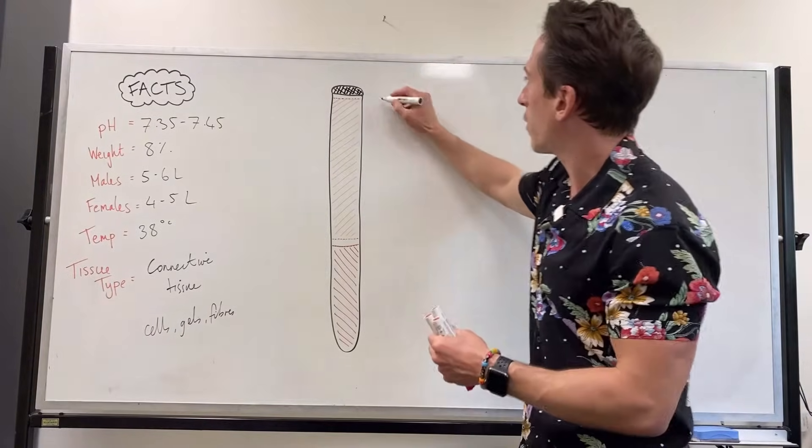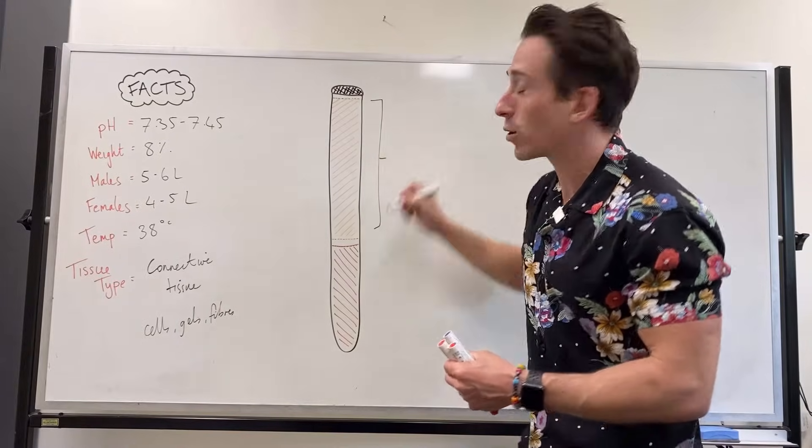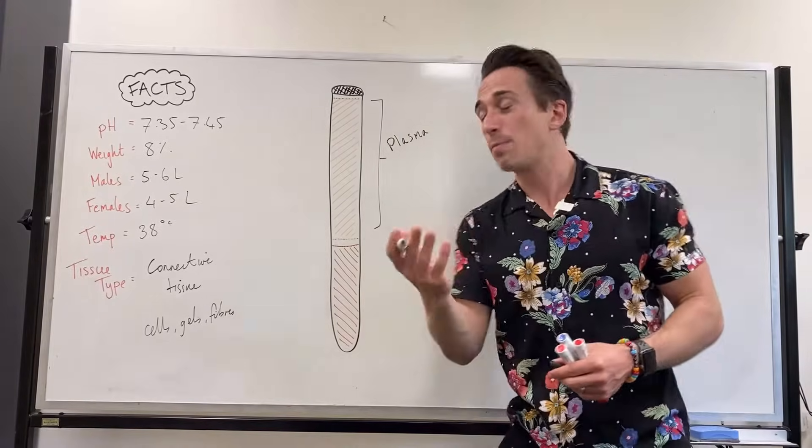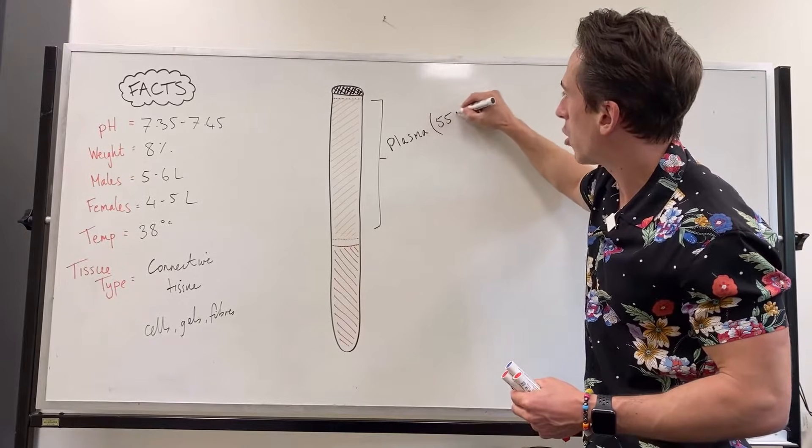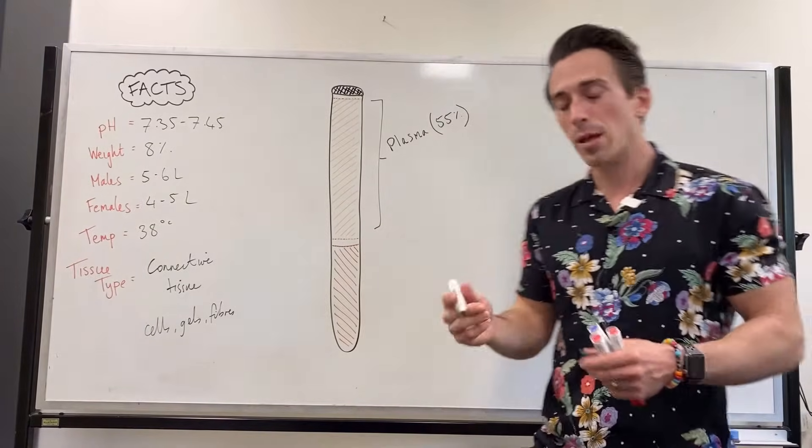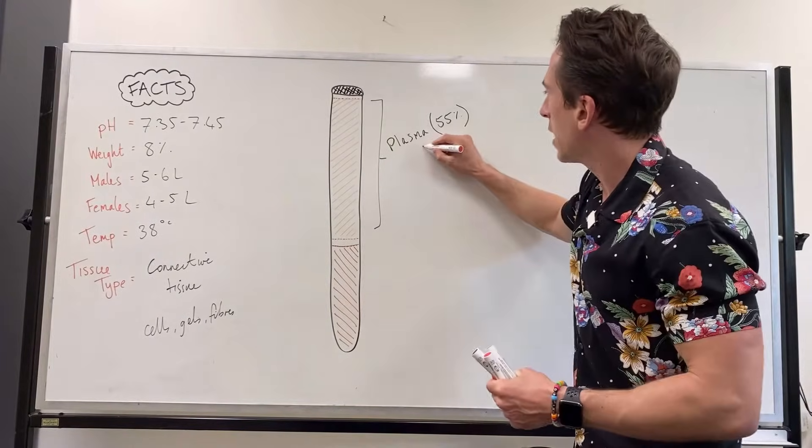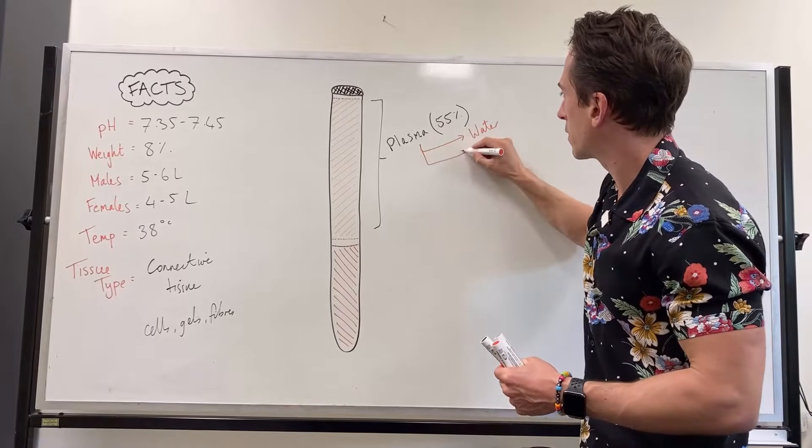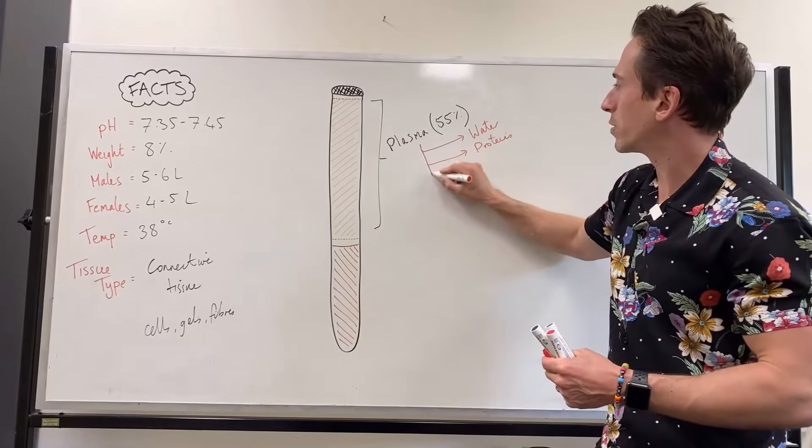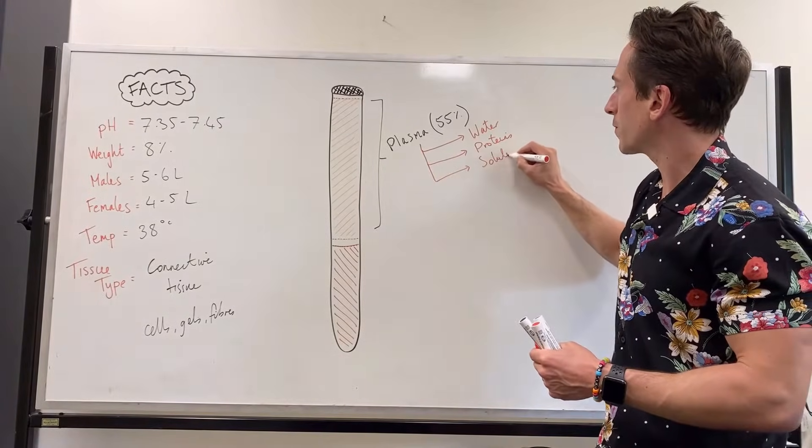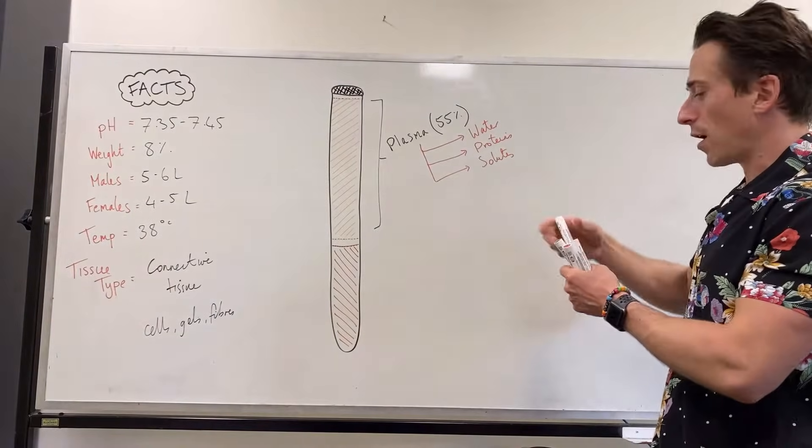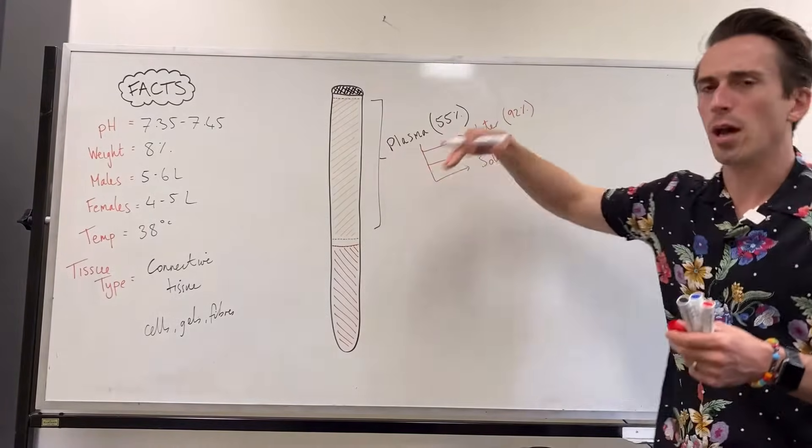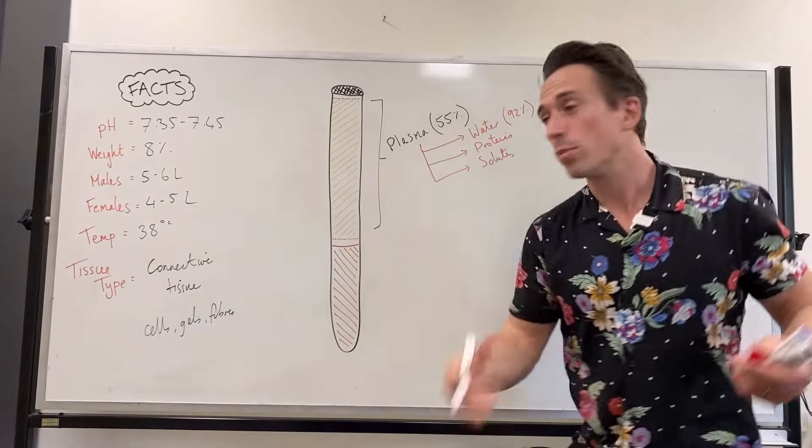So the first layer is the layer at the top that we're going to focus on to begin with and that is what we call blood plasma. And the blood plasma consists basically it's 55% of your entire blood volume is blood plasma. And blood plasma is made up of three main things that you should know. It's made up of water, proteins and solutes.